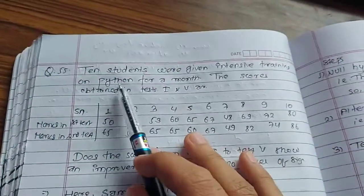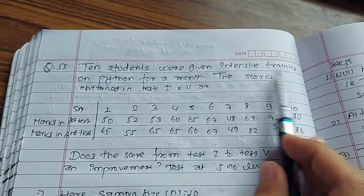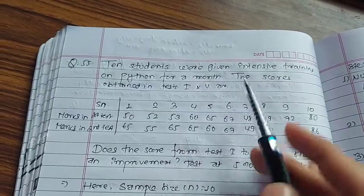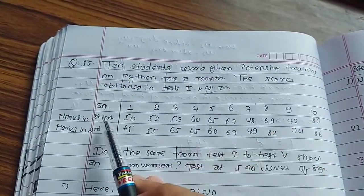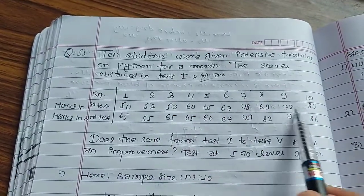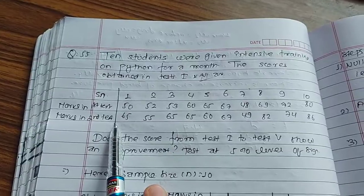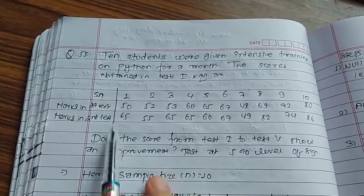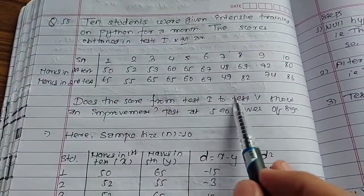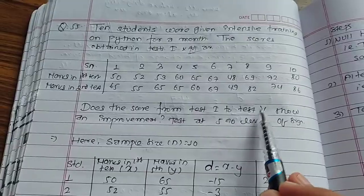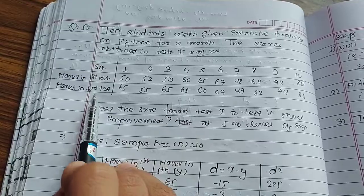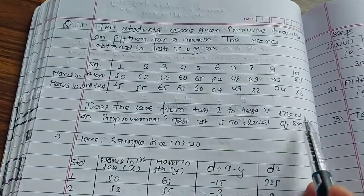Here's an example. Ten students were given intensive training on Python for a month. There was a test before and after. Does the score from test 1 to test 2 improve? Test at 5% level of significance.